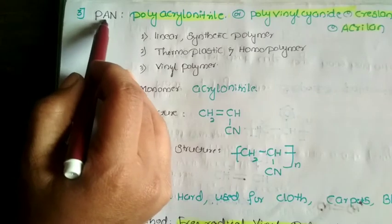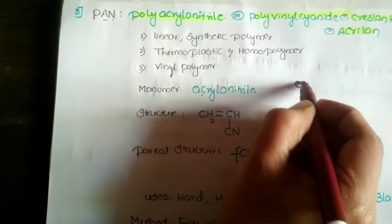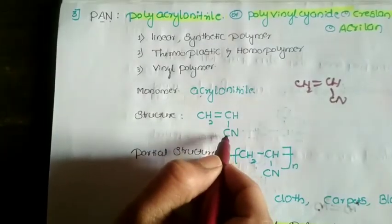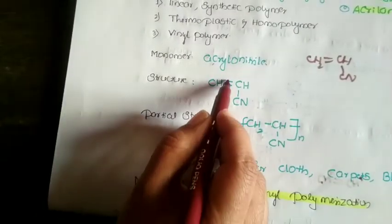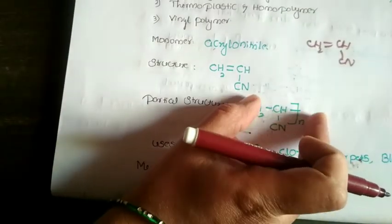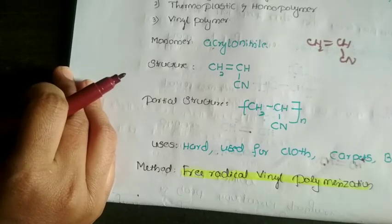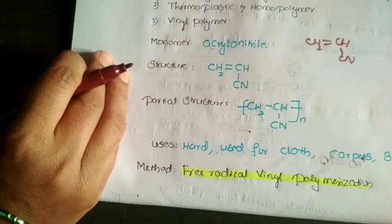The monomer of PAN is acrylonitrile, applying the same short trick. The structure: take CH₂=CH₂, remove one hydrogen from the CH₂ group, and put a cyanide (–CN) group in its place — that gives the acrylonitrile or vinyl cyanide structure. The partial structure shows the double bond acting as a link. PAN is used in the preparation of clothes, carpets, and blankets. The mode of polymerization is free radical vinyl polymerization.